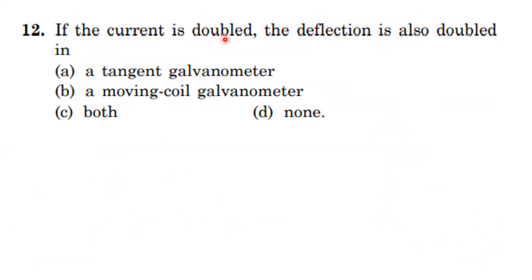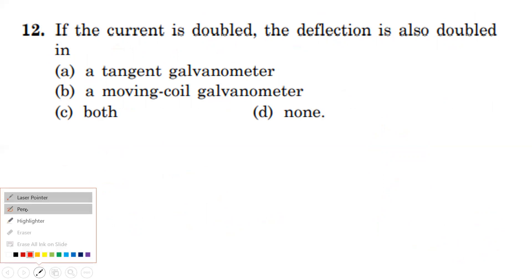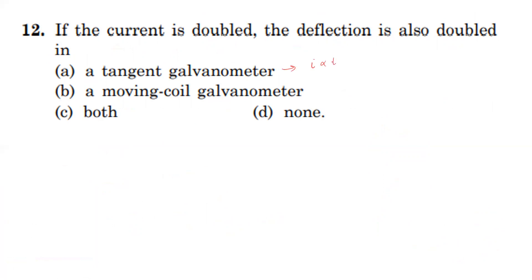If the current is doubled, the deflection is also doubled — but in which instrument? In a tangent galvanometer, current is directly proportional to tan θ, so doubling the current doubles tan θ but not θ itself. In a moving coil galvanometer, current is directly proportional to θ. So if current is doubled, the deflection θ also doubles. The answer refers to the moving coil galvanometer.